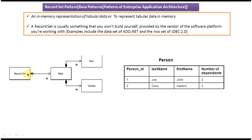So how can we get a Record Set for a particular database table? You don't need to build the Record Set yourself. There are frameworks available — you just use the framework's methods to get the Record Set. For example, if I want to get a Record Set of the Person table, I use the JDBC framework. JDBC provides methods that I can use to retrieve the Record Set and then access the person information from it.